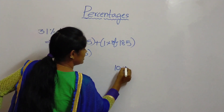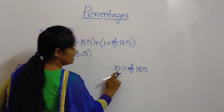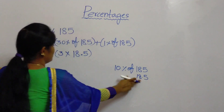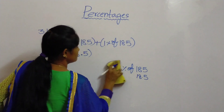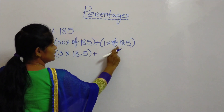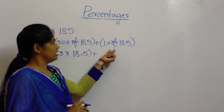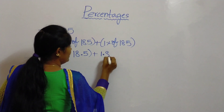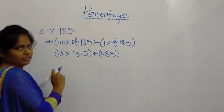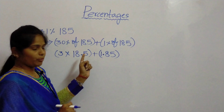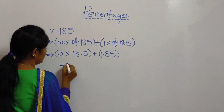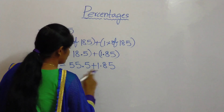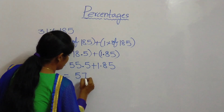Because 10 percentage of 185 — since 10 percentage has 1 zero, after 1 digit put the decimal, so it is 18.5. The same value we have written here. Plus 1 percentage of 185. As we discussed previously, 1 percentage means after 2 digits we have to put the decimal. So 1.85. So 3 into 18 is 54, and 3 into 0.5 is 1.5. So 54 plus 1.5 is 55.5 plus 1.85. So the added value of these two is 57.35.